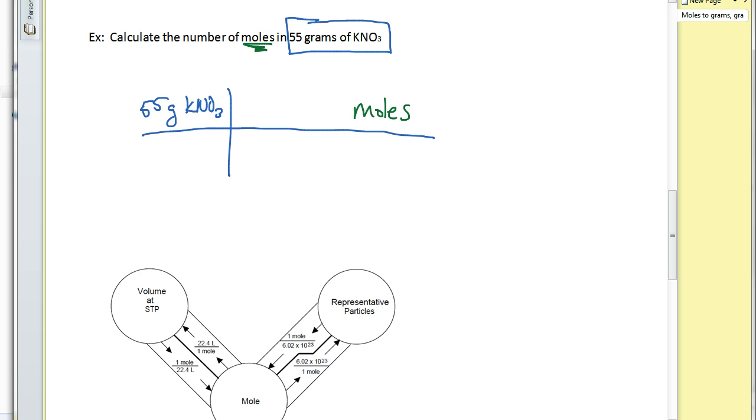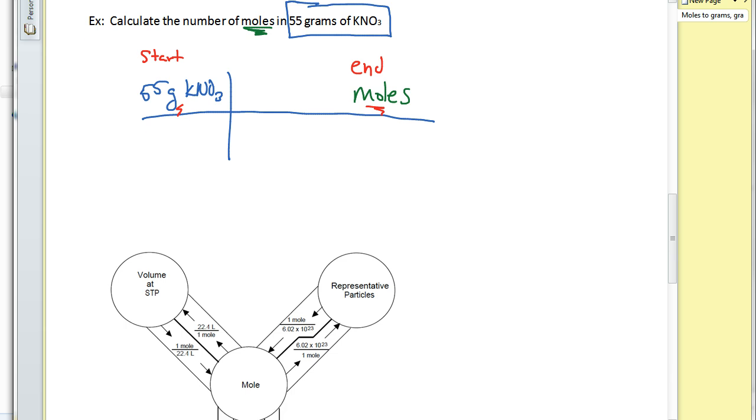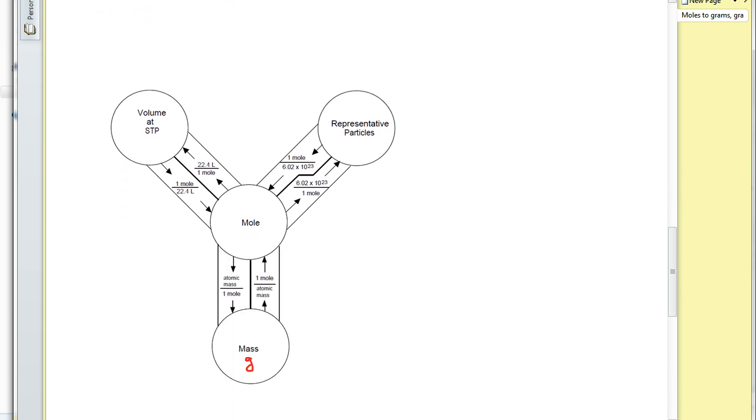So again, we can use the mole road. This tells us where to start on the mole road. We're going to start at grams. This tells us where to end on the mole road. We're going to end at moles. So let's go down here and look and see here. So we're going to start at grams right here. And we're going to end at moles right there. So essentially, we're going up the road this way. And we're going to use this conversion factor. One mole over the atomic mass.